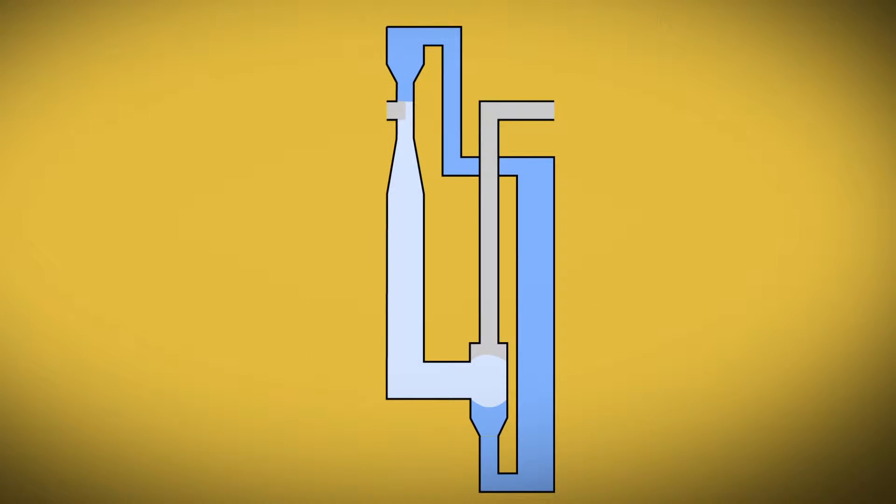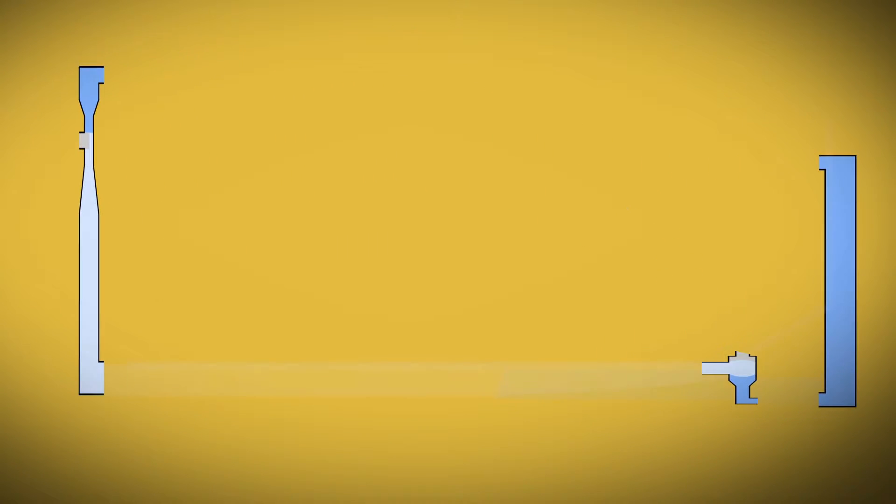HACs can also be directly integrated with gas storage systems by separating the input and output ducts and increasing the size of the connecting duct.